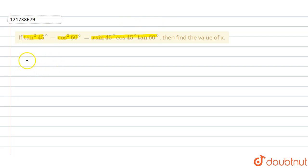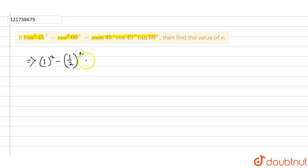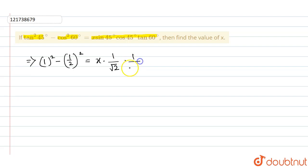So, tan squared 45 degrees value is 1. So, 1 squared minus cos 60 value is 1 by 2. So, 1 by 2 squared. Equals to x sin 45, which is 1 by root 2. Cos 45 is 1 by root 2. And tan 60 is root 3.